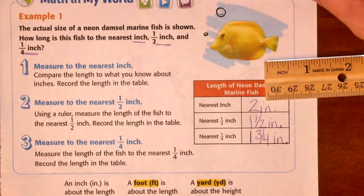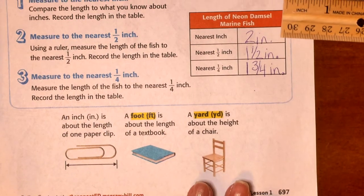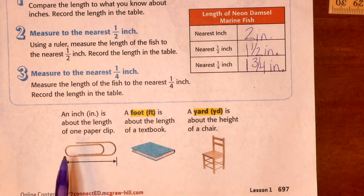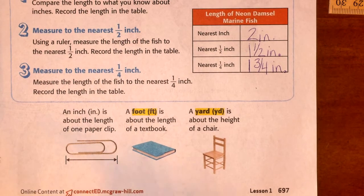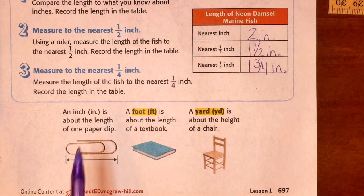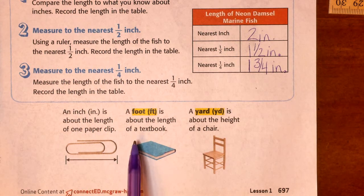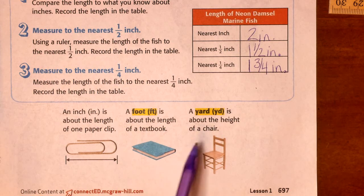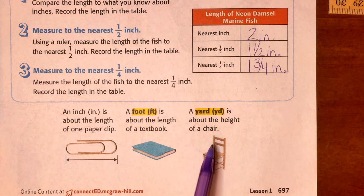At the bottom of your paper, they do give us some benchmarks. They say that an inch is about the length of a paper clip. A foot is about the length of a typical textbook. And a yard is about the height of a chair. So, keep those in mind.